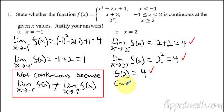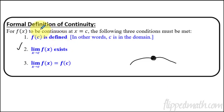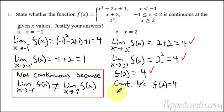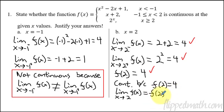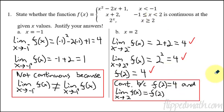So we have continuity. It is continuous at X equals two because F of two equals four — proving F of C is defined — and the limit as X approaches two of F of X equals F of two. What I've boxed here is your final answer with justification, and the one-sided limit work showed how I led to that justification.